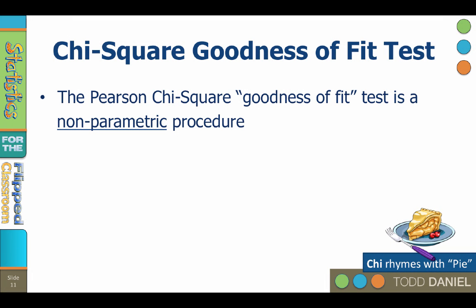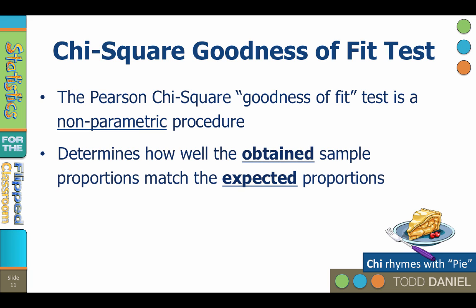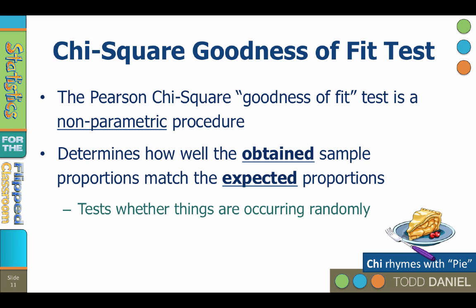Invented by Carl Pearson, the chi-square goodness of fit test is a non-parametric procedure that uses sample data to test hypotheses about the proportion of a population distribution. It tests whether the proportions from the obtained sample are a good fit to the expected proportions known to exist in the population. It tests whether things are occurring randomly — if so, the observed proportions should match what we expect from randomness, and if not, the observed proportions are not random. Chi-square answers the question: are my observations a good fit to what I would expect?